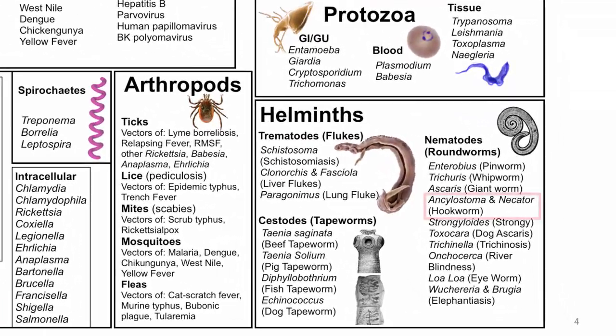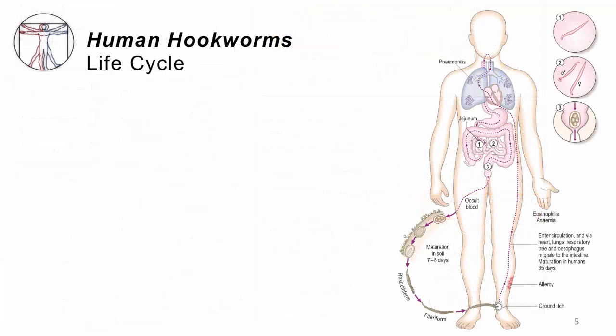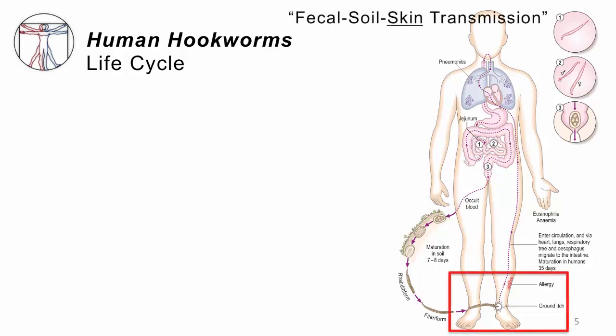Here's the map of life. We're still in the helminths. These are GI nematodes — Ancylostoma and Necator — and for both of those worms, they behave essentially exactly the same way. The life cycle starts at the bottom of the screen, not at the top. This is not an infection you get by eating contaminated food or drink, but just by walking barefoot through contaminated soil. There are microscopic infectious filariform worms and they will burrow right through your intact skin. This is fecal-soil-skin transmission, different from Ascaris and the other worms we've talked about.